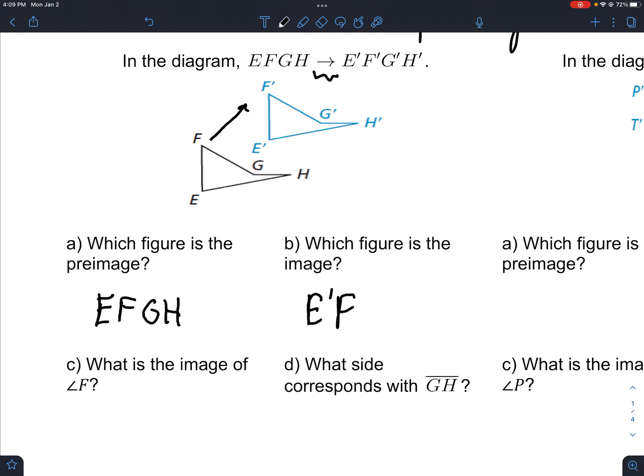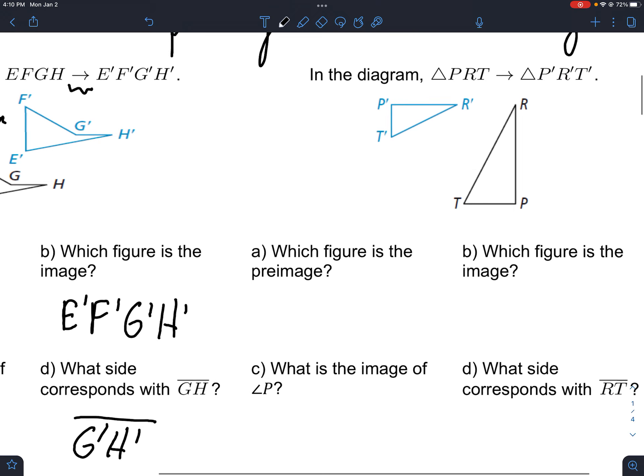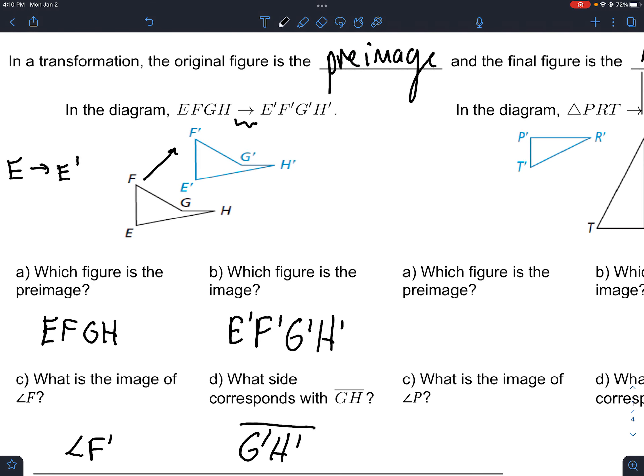That's what these prime marks are normally for. For example, E goes to E prime. So prime is kind of like after. The image of F is angle F prime, and GH becomes G prime H prime. Overall it looks like that transformation was a slide.